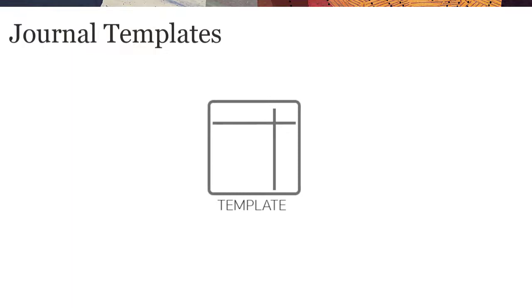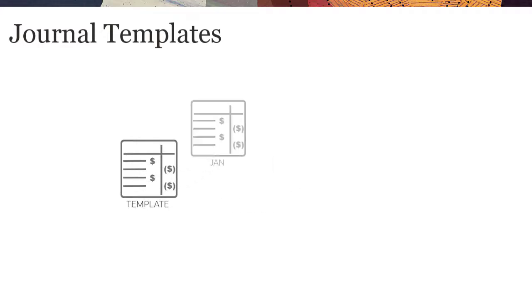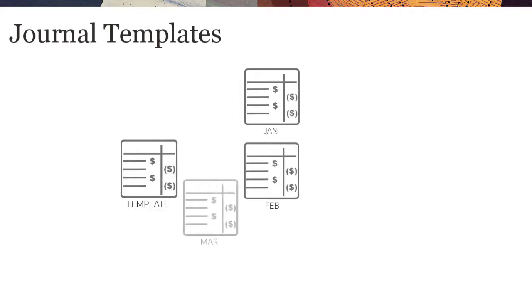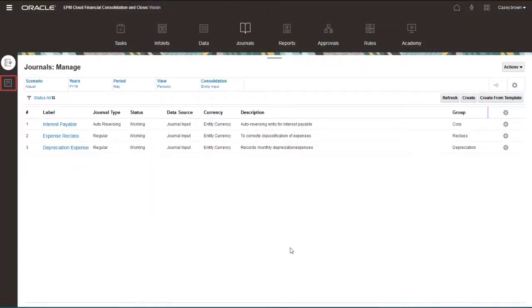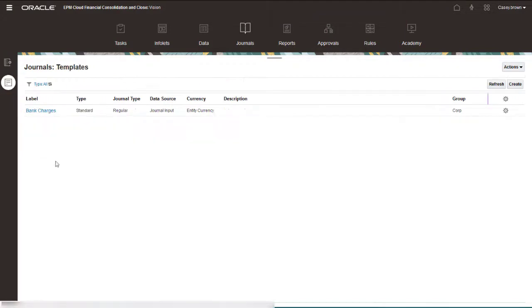Journal templates contain line items that you can use as a starting point for journals. You add line items for an adjustment to a template, and then select a template when you create journals for a point of view. You create journal templates from the Templates tab on the Manage Journals page. You do not set a point of view for journal templates.